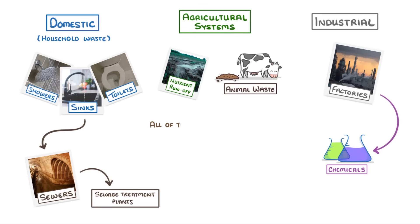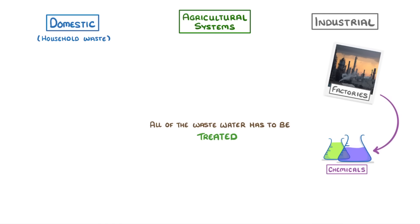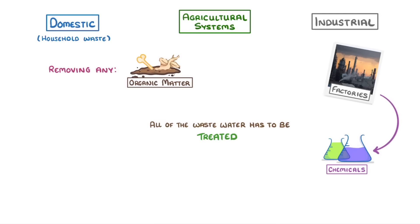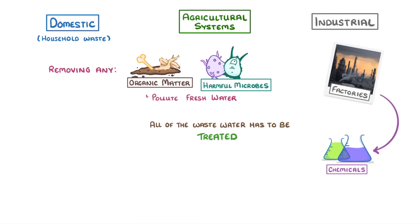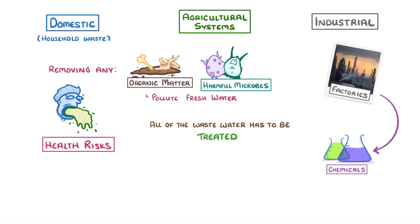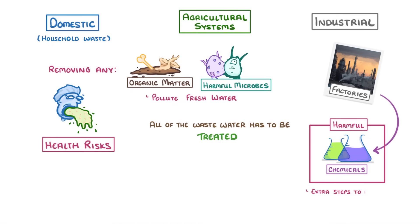Regardless of the particular source, all of the wastewater has to be treated to make it safe before we can properly dispose of it. For domestic and agricultural sewage, this generally requires removing any organic matter or harmful microbes which could pollute fresh water and pose health risks. In addition, wastewater from industrial processes often contains harmful chemicals and so requires extra steps to remove them.